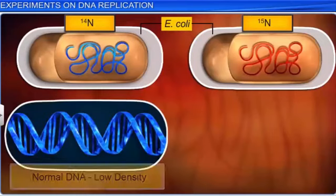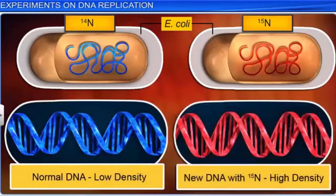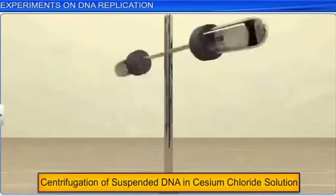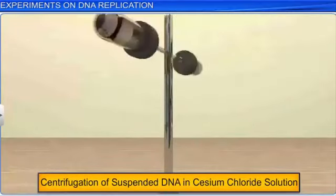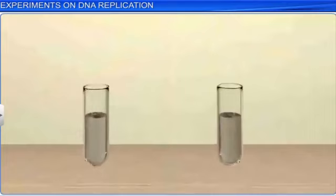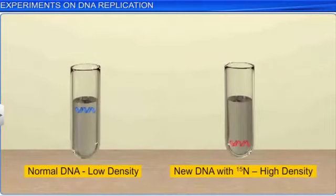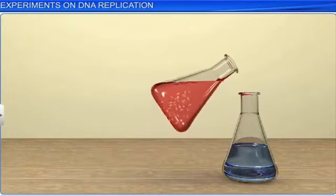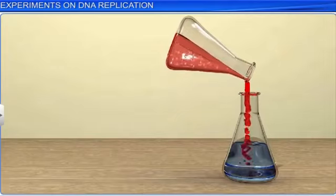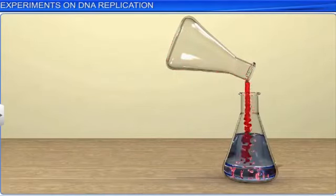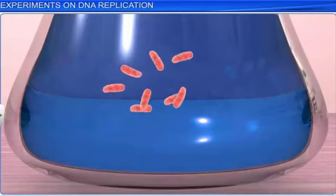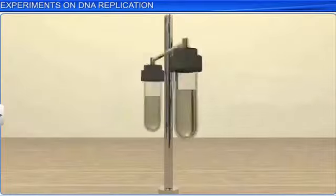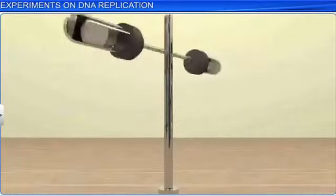This new heavy DNA molecule was distinguished from normal DNA by virtue of its high density while being extracted via centrifugation in a cesium chloride, or CsCl, density gradient. Later, E. coli cells were transferred into a medium with normal NH₄Cl with the ¹⁴N isotope. After the cells multiplied, their DNA was extracted and separated independently in CsCl gradients to record the density of DNA.